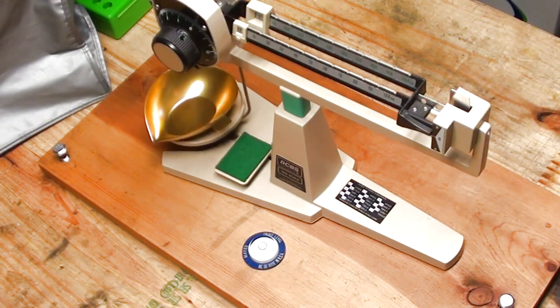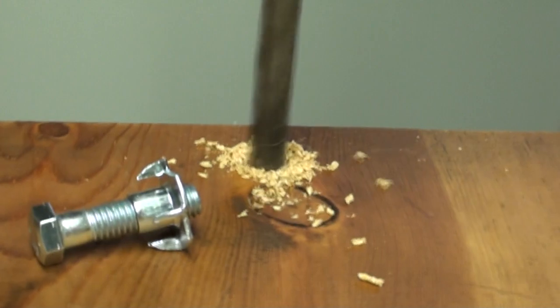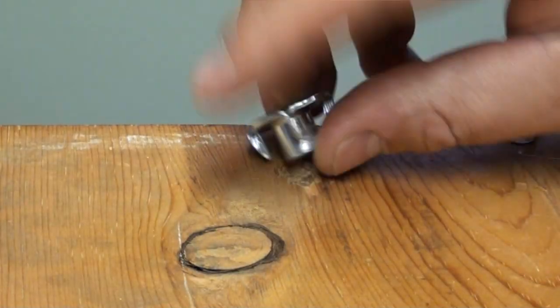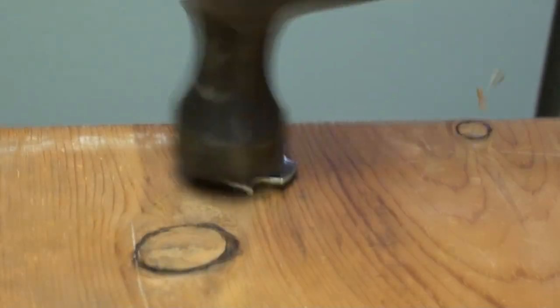I also sanded it with 100 grit sandpaper, and I drilled three holes for three points of contact so it won't rock. I put T-nuts on the back side.